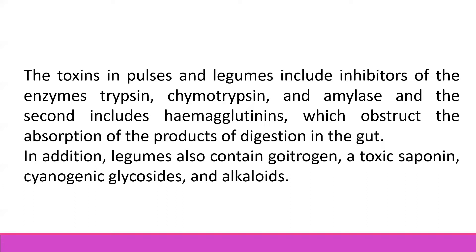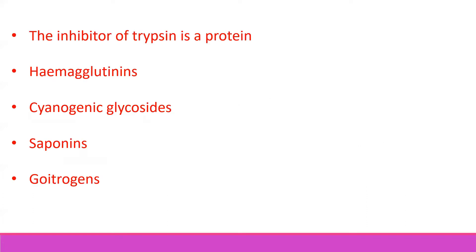All these have adverse effects when consumed in large amounts. The trypsin inhibitor is a protein found in a number of pulses. This inhibitor suppresses the release of amino acids and thus does not allow for normal growth when we consume these pulses. Hemagglutinins are also proteins. They combine with products of digestion and impair the efficiency of absorption of the digested products.